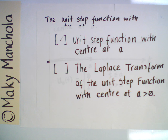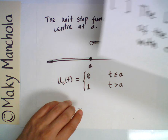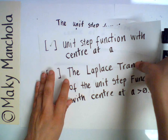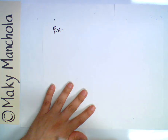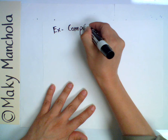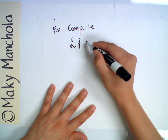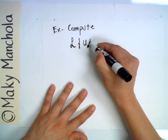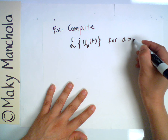Now what we want to do is compute the Laplace transform for the unit step function with center at A greater than zero. So let's do this as an example: we want to compute the Laplace transform of u_A(T) for A greater than zero.